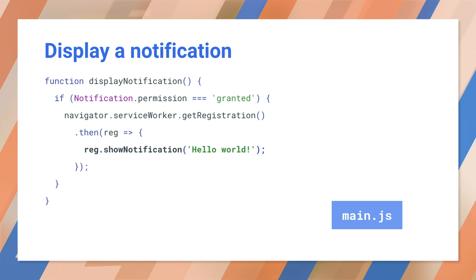You first check that permission has been granted, and then you call show notification on the service worker registration object and pass in the notification title. You can also try this out from the browser console — try it on the new tab page. For push notifications, you call show notification in the service worker in response to a push event when a message arrives.